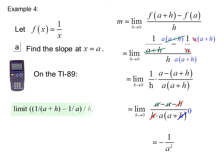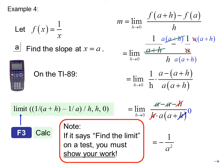On the TI-89, we can take the limit of (1 divided by (a plus h) minus 1 over a) all in parentheses divided by h, as h goes to 0. Limit is F3 Calculus. Note: if it says find the limit on a test, you must show your work. Still, it's nice to know that the TI-89 will find limits.